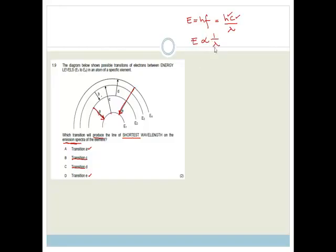They want to know the shortest wavelength. We know that E is equal to HF, which can be written as HC over wavelength. So H is Planck's constant. C is the speed of light. You can be saying, E is inversely proportional to 1 over the wavelength. So the shorter the wavelength, the greater the energy. And the longer the wavelength, the smaller the energy. So they want the shortest wavelength, which is going to be the greatest energy change, which is therefore E.